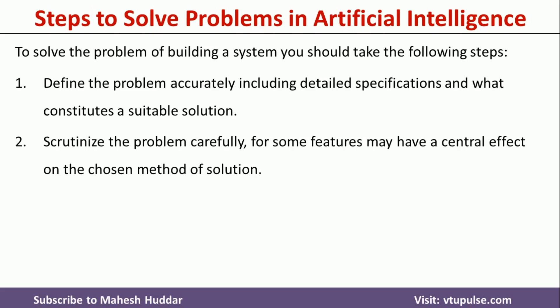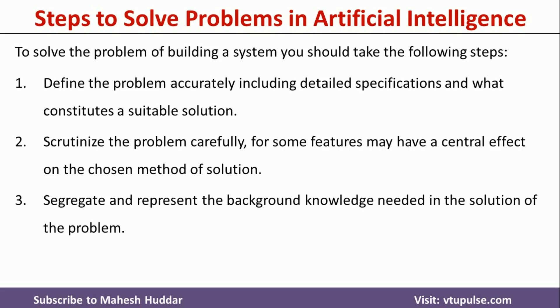Within those features or characteristics, some of them may be very important for the particular problem, so we need to identify those. Then, if you want to solve any problem, we need to have some background knowledge. For example, if you are trying to solve a healthcare-related problem using Artificial Intelligence, you should have background knowledge of the healthcare industry. Similarly, if you want to design a chess game, you should know how chess is played. So whenever you want to solve a problem, you should have some background knowledge — that's the third step.